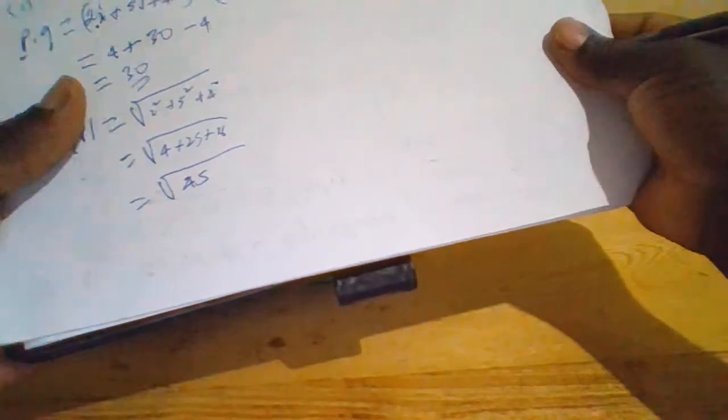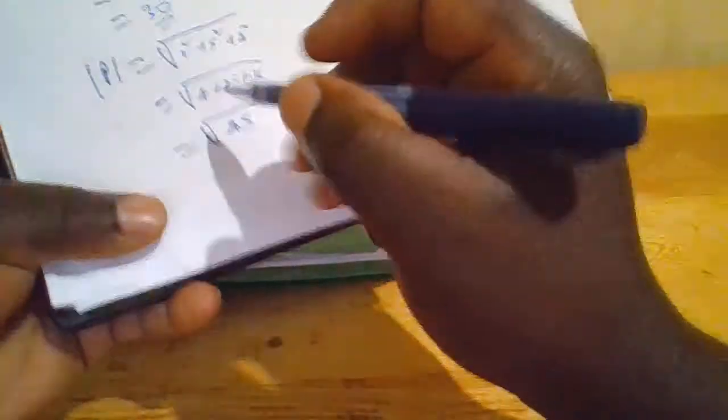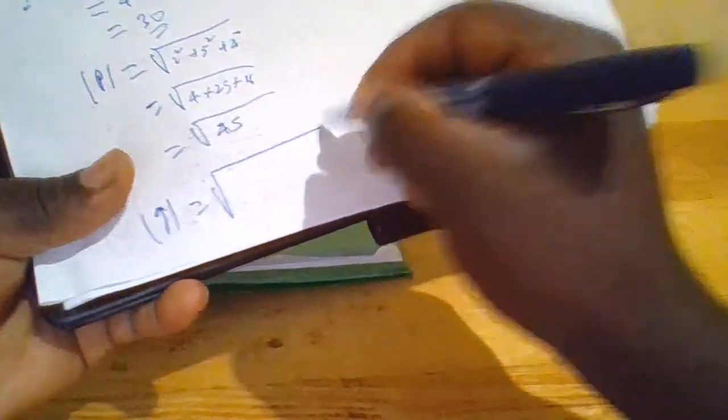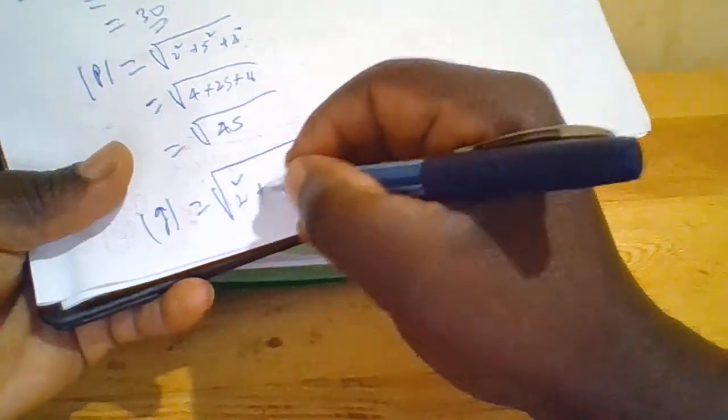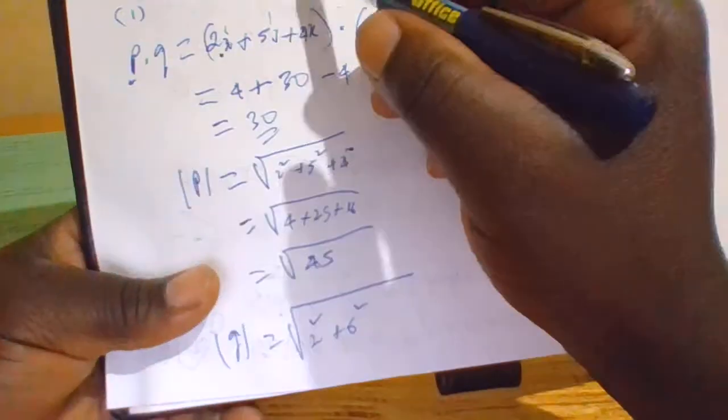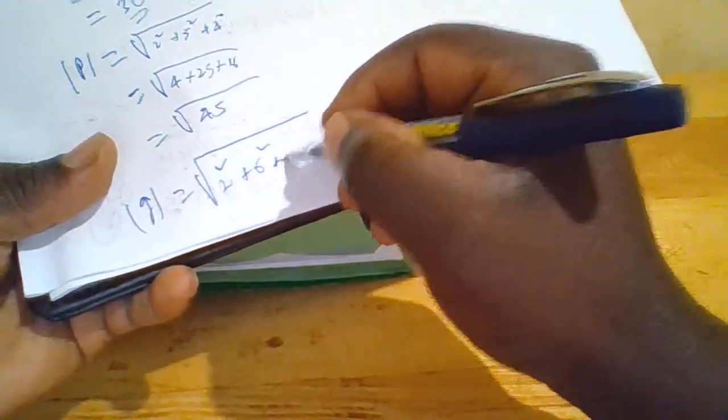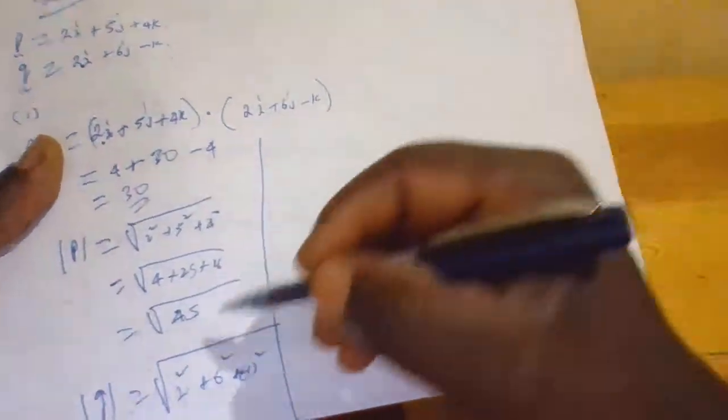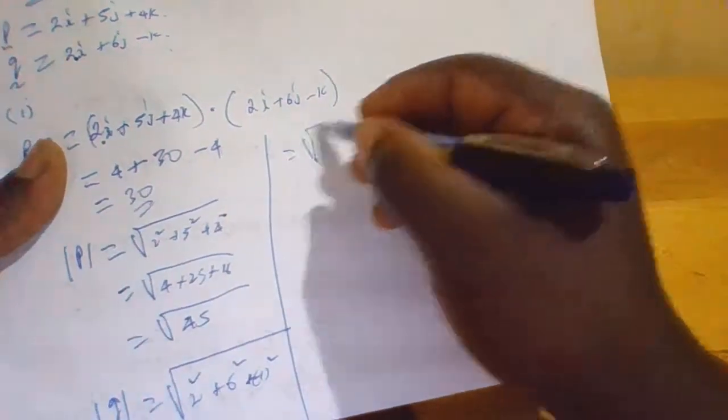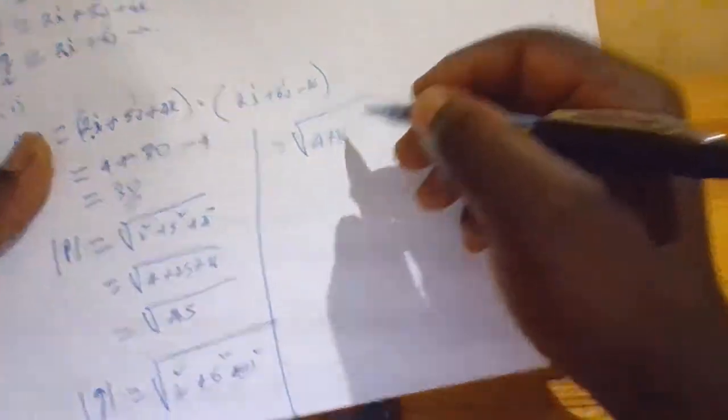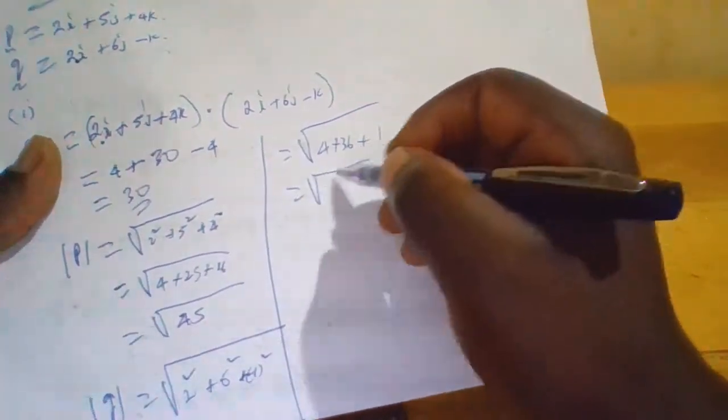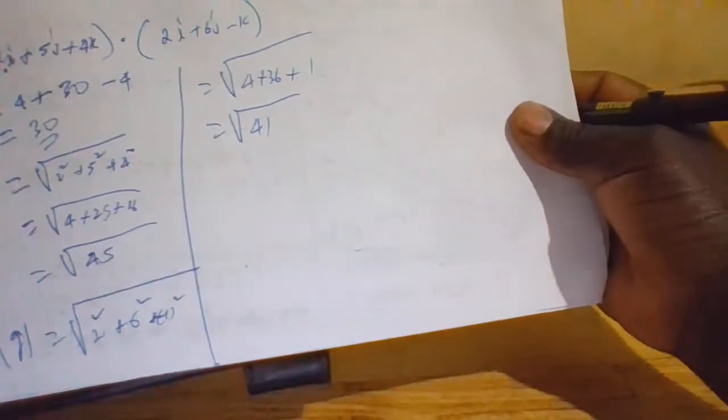And then the modulus of q is 2 squared plus 6 squared plus minus 1 squared. This equals the square root of 4 plus 36 plus 1, which is the square root of 41.